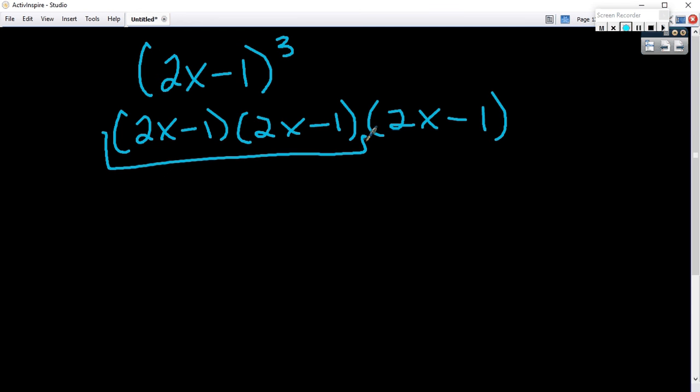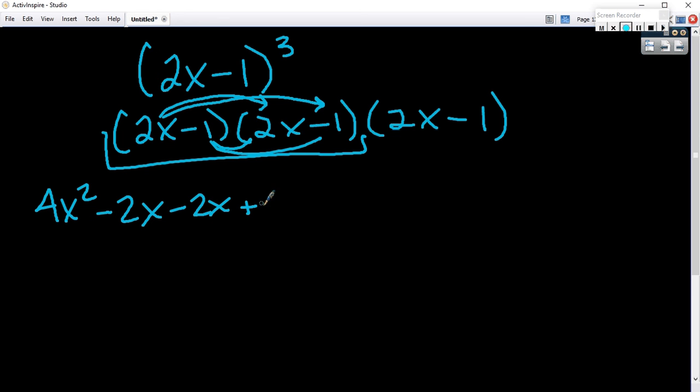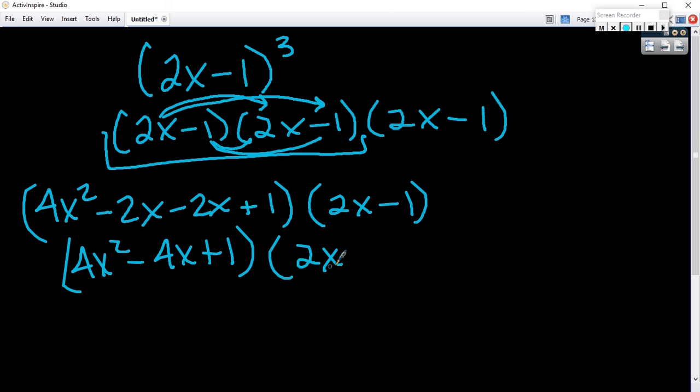So what you want to do is you want to multiply these two out. Get the answer, and then multiply it to the third. So just quickly, 2x times 2x is 4x squared. 2x times negative 1? Minus 2x. So I get 4x squared minus 4x plus 1. Now I've got to do it one more time.